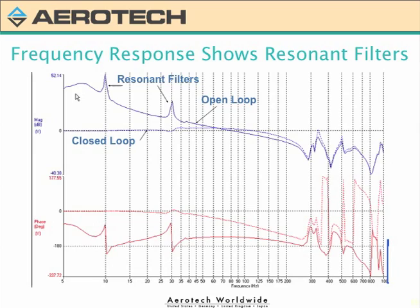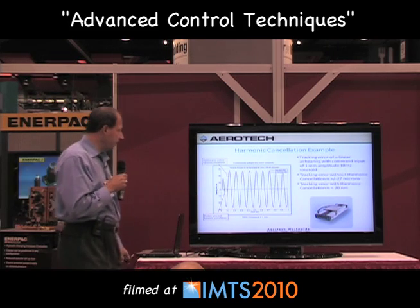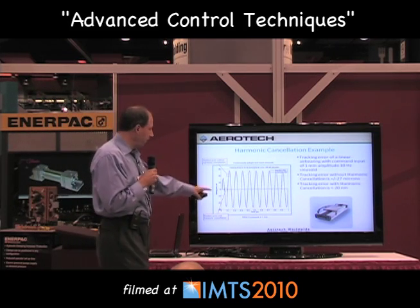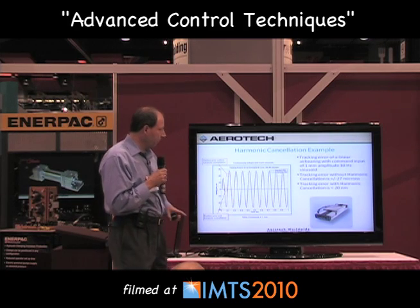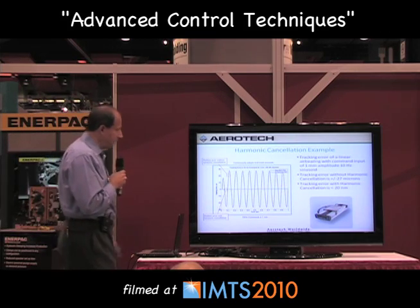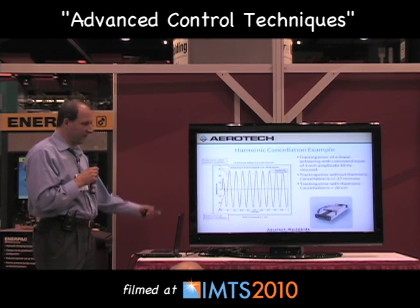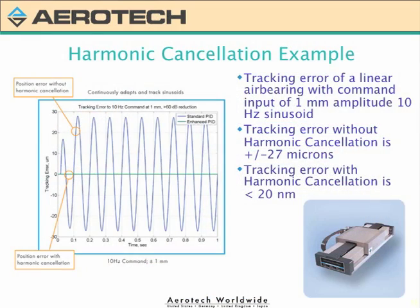Here's one other example using an air bearing, which removes friction and other non-linearities so we can see just how well it works with a very predictable system. I again stimulate this with a sine wave at 10 Hz. With the harmonic cancellation filter off, you can see about 27 microns of sinusoidal error. I then turn it on, and the resulting error — the green line that looks like a zero line — is less than 20 nanometers peak to peak. That's a 63 dB reduction in the error, showing very large gains with this filter.